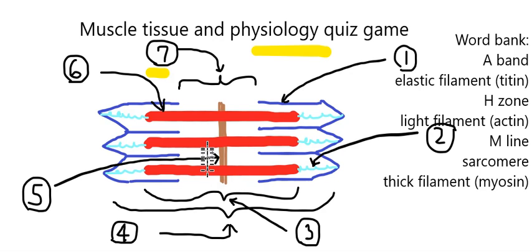It is the zone of thick filaments which has no actin. This band in the middle and the I-bands on either end, these over here as well, shrink in a muscle contraction.